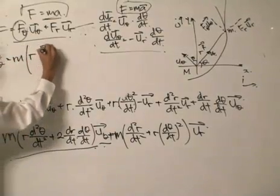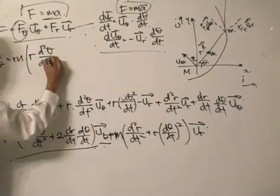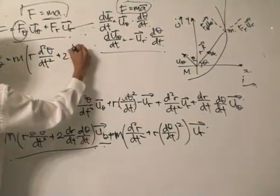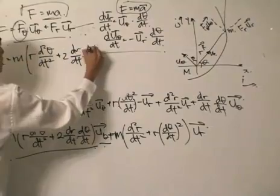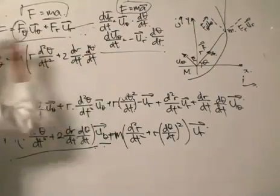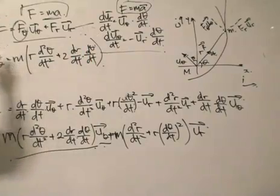R d²θ/dt² plus 2 dR/dθ dθ/dt, use of dR/dt dθ/dt. This is for the F_theta.